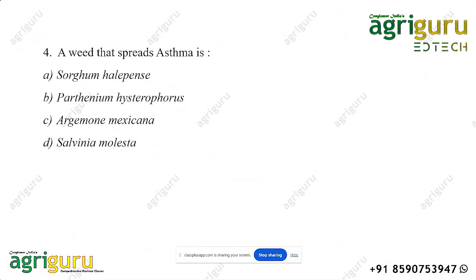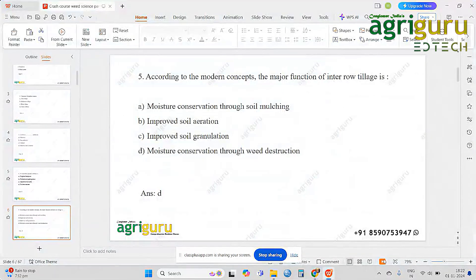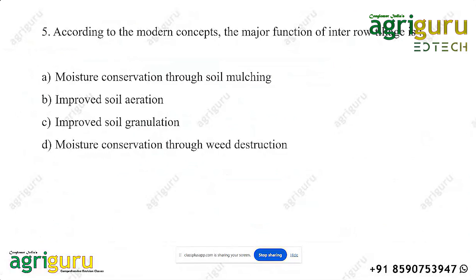Salvinia molesta is an aquatic weed. It also provides habitat for the malaria-carrying mosquito insect. According to the modern concept, the major function of inter-tillage is moisture conservation through soil mulching, improved aeration, and improved soil granulation — not moisture conservation through weed destruction. That is the logical answer.